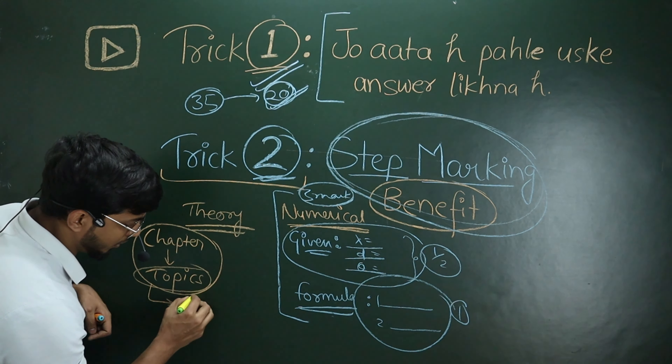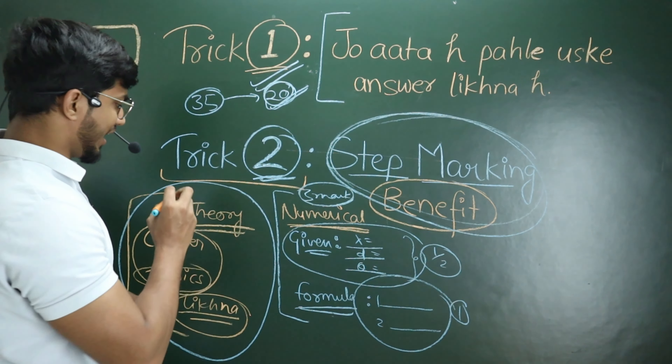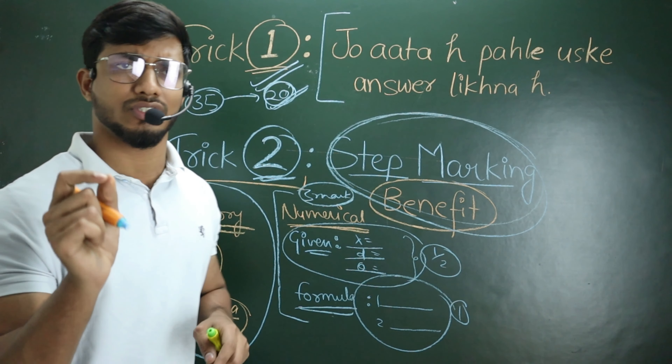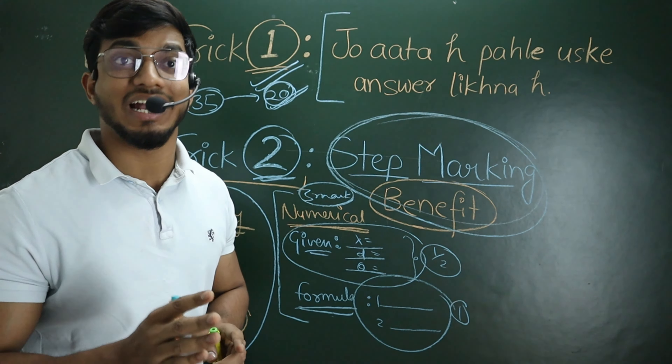Whatever you have to write — for example, in TIR (Total Internal Reflection), write the conditions. The board rule is: if a child has written anything relevant from that chapter, they will get marks through step marking. If a theoretical question is asked and a child has written anything from that chapter, they will get marks. Even if the answer has some mistakes, if you have attempted the question, you will get marks.